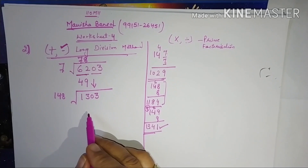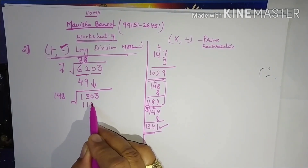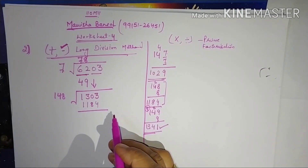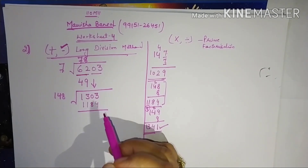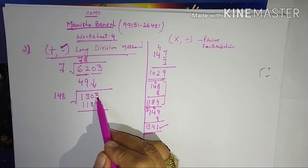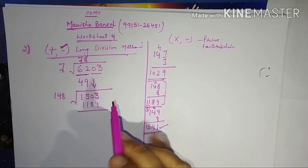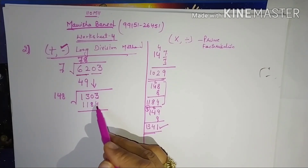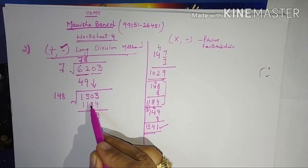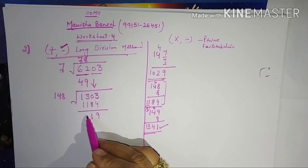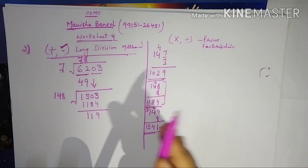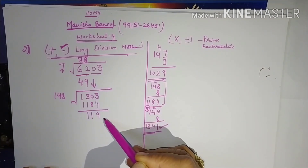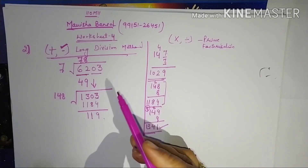Placing 8 here, the product is 1184. Now do the subtraction: 1303 minus 1184. Borrowing where needed — 13 minus 4 = 9, 9 minus 8 = 1, 2 minus 1 = 1. The remainder is 119. There is nothing left to bring down, so this is the remainder left.